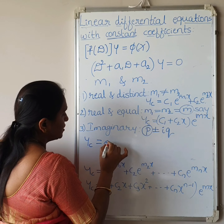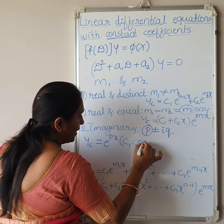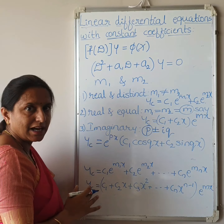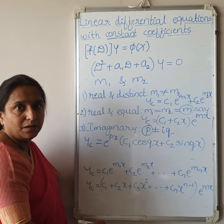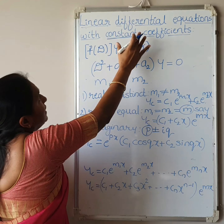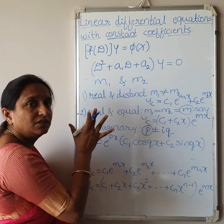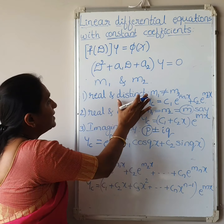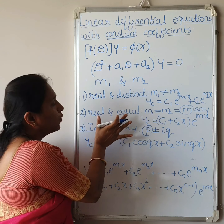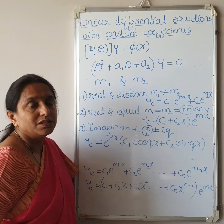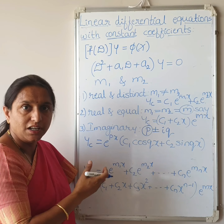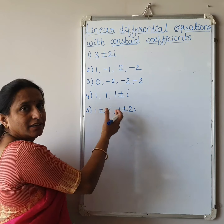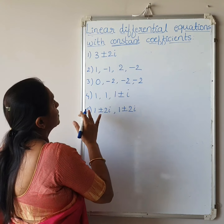For imaginary roots of the form p ± iq, where p is the real part and q is the imaginary part, the complementary function is yc equals e^(px)·(c1·cos(qx) plus c2·sin(qx)). This part is very important. In almost all problems involving linear differential equations with constant coefficients, we first find the roots and write the complementary function — even for non-homogeneous equations.